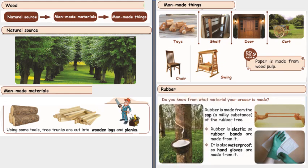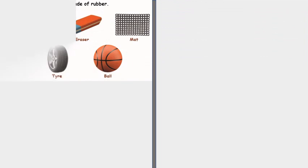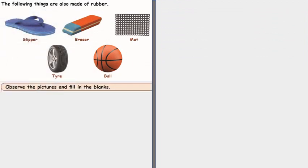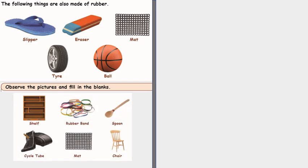Moving on to rubber. Now the eraser what we use, do we know which material is used for? Rubber is made from the sap, that is a milky substance of the rubber tree. Rubber is elastic, so rubber bands are made from it. And it is also waterproof, so hand gloves are also made from it. Now here are some examples of rubber: slipper, eraser, mat, tire, ball.